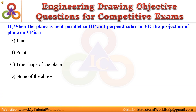11. When the plane is held parallel to HP and perpendicular to VP, the projection of the plane on VP is: A. Line. B. Point. C. True shape of the plane. D. None of the above. Answer is: Line.